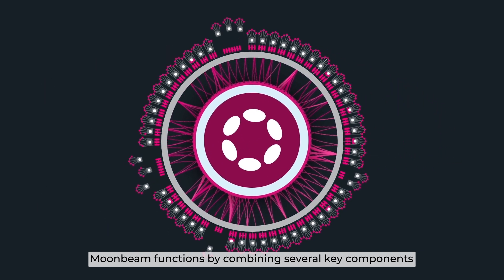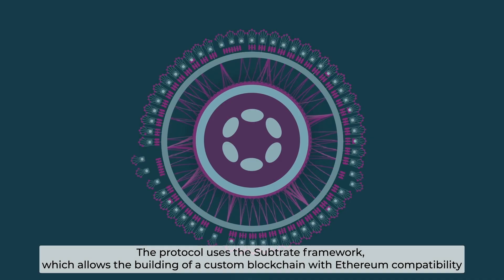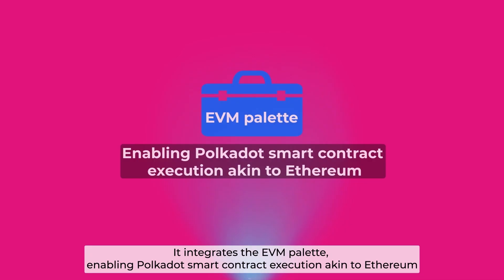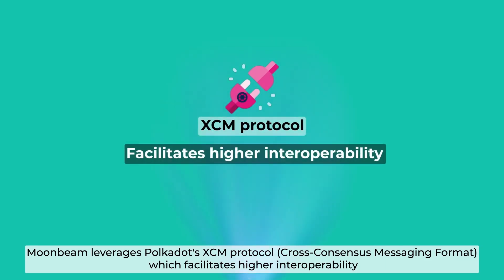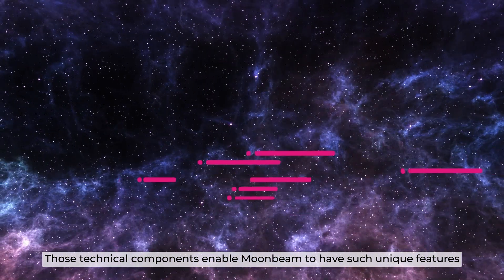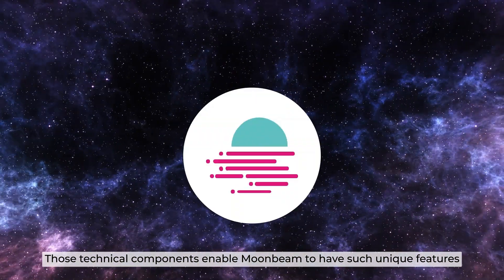Moonbeam functions by combining several key components. The protocol uses the Substrate Framework, which allows building a custom blockchain with Ethereum compatibility. It integrates the EVM pallet, enabling Polkadot's smart contract execution akin to Ethereum. Moonbeam leverages Polkadot's XCM protocol, which facilitates higher interoperability. The project also relies on the Polkadot NPoS consensus mechanism that ensures network security and block validation. Those technical components enable Moonbeam to have such unique features.